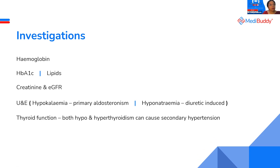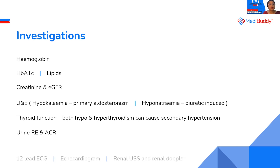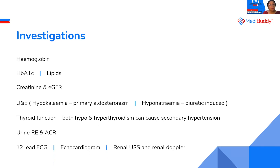Thyroid — both hypothyroid and hyperthyroid — can cause blood pressure changes. Urine routine and ACR: ACR has great value in management, so you have to do that. Also consider a late ECG, echocardiogram, renal ultrasound, and renal Doppler wherever applicable.